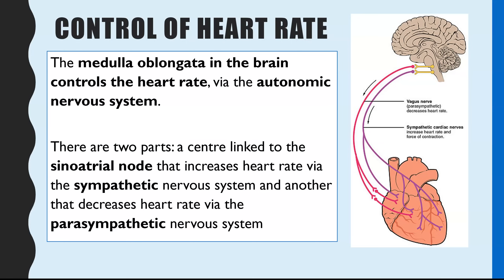How quickly the SAN releases that wave of depolarisation is controlled by the nervous system — specifically the autonomic nervous system, which is automatic and subconscious; you do not think about making it happen. The coordinator centre is the medulla oblongata in the brain, which is the part that controls heart rate. There are nerves connecting directly to the SAN in the heart, enabling control over how quickly the wave of depolarisation is released.